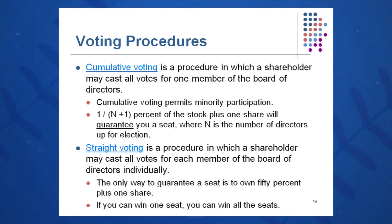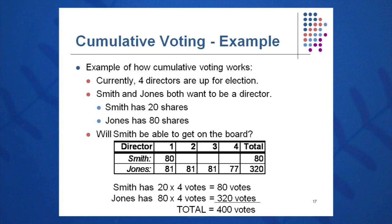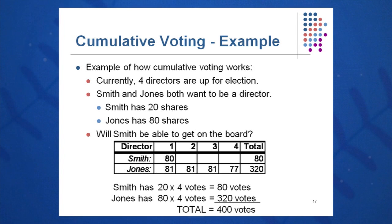Let's see how that works under cumulative voting. There's a good example in our text with Smith and Jones. Currently, four directors will be elected — so N equals four. Mr. Smith and Mr. Jones would both like a seat on the board of directors. The question is: how many shares do they need to guarantee themselves a seat on the board?